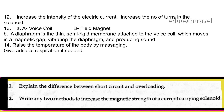Write any two methods to increase the magnetic strength of a current-carrying solenoid. First, increase the intensity of current. Second, increase the number of turns in the solenoid.